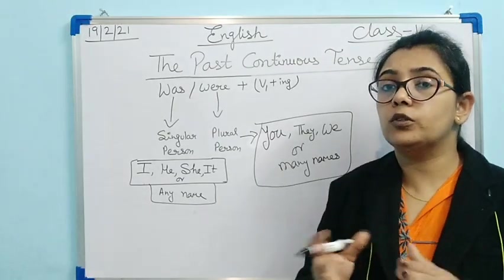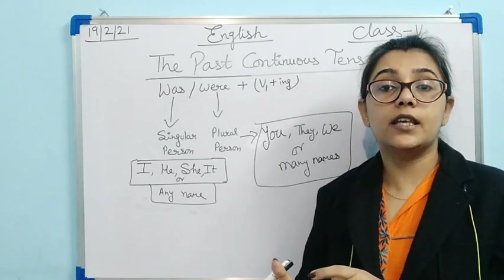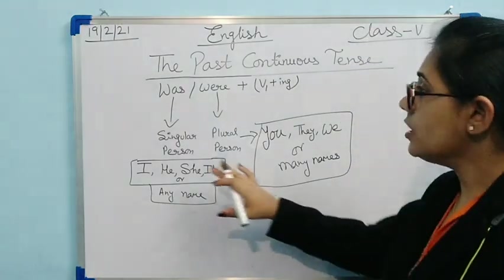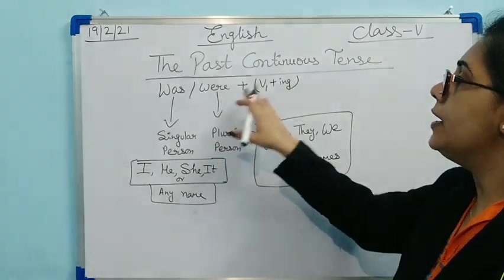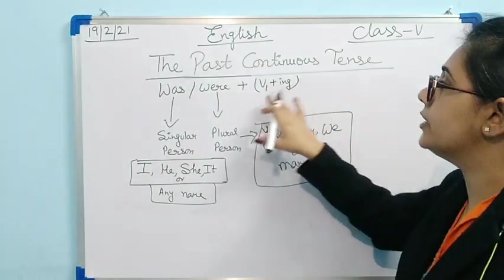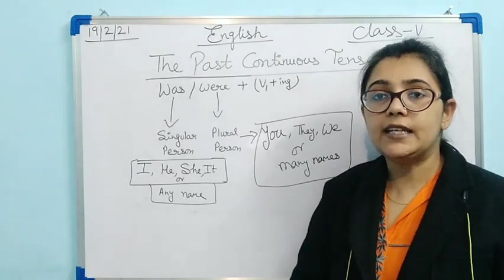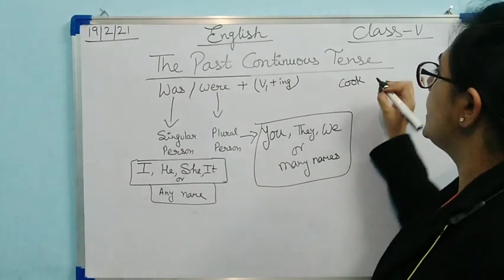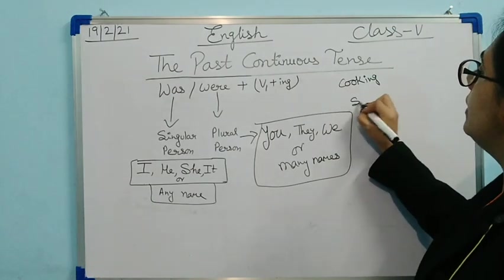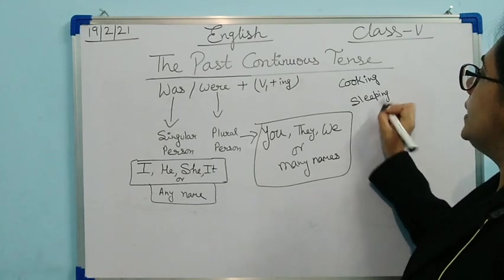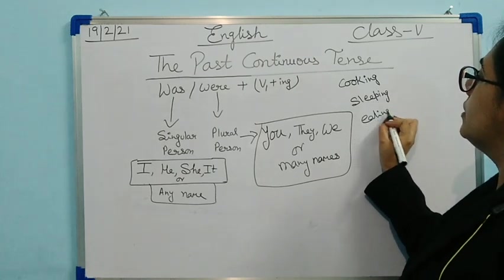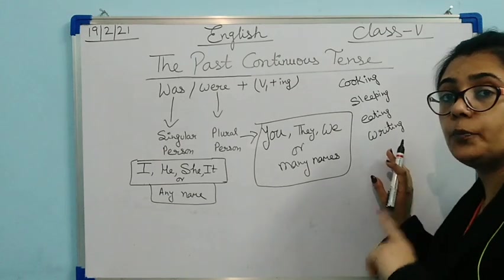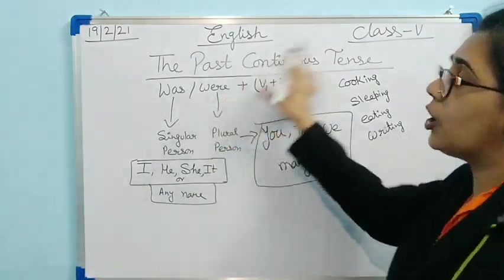For example, if I say two or three friends together — 'A, B and C was going' — no, it will be 'were going' because they are plural. The formula is: was or were + verb first form + -ing. Verb first form means eat, sleep, cook — any verb in its first form. And with -ing: cooking, sleeping, eating, writing — any verb plus -ing. The verb should be in its base form.